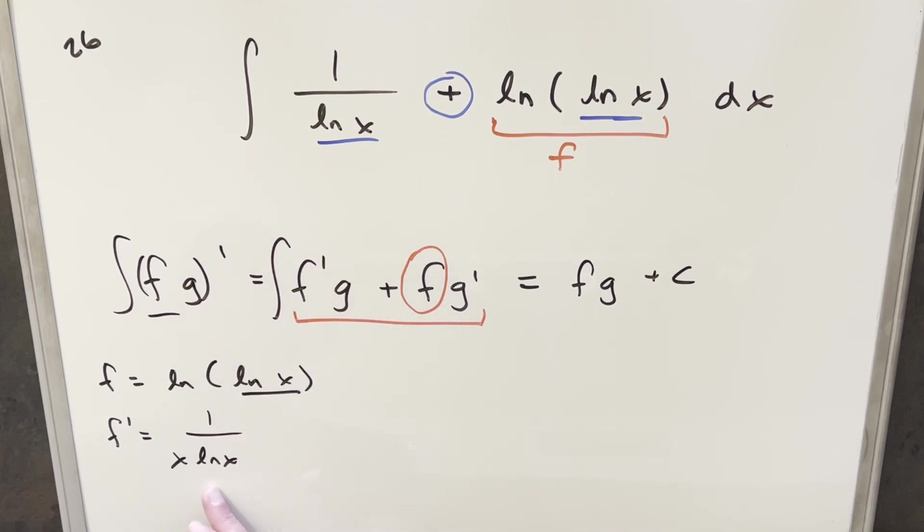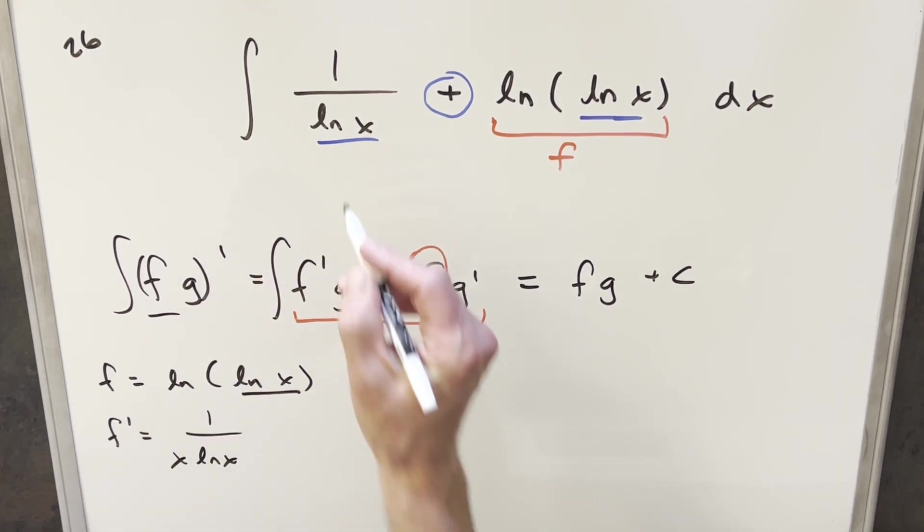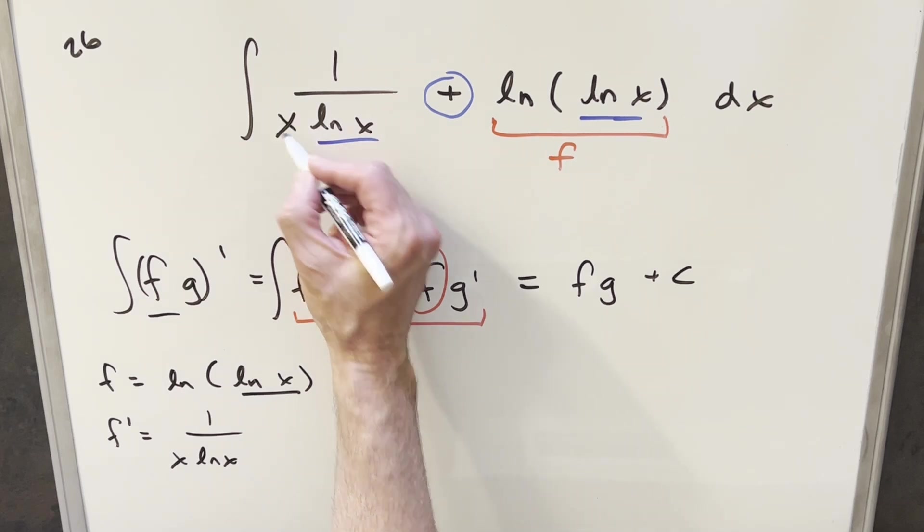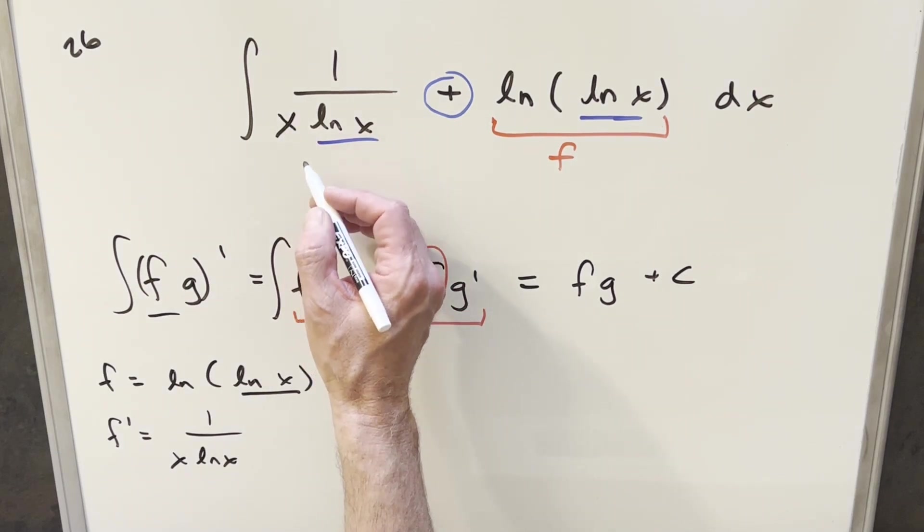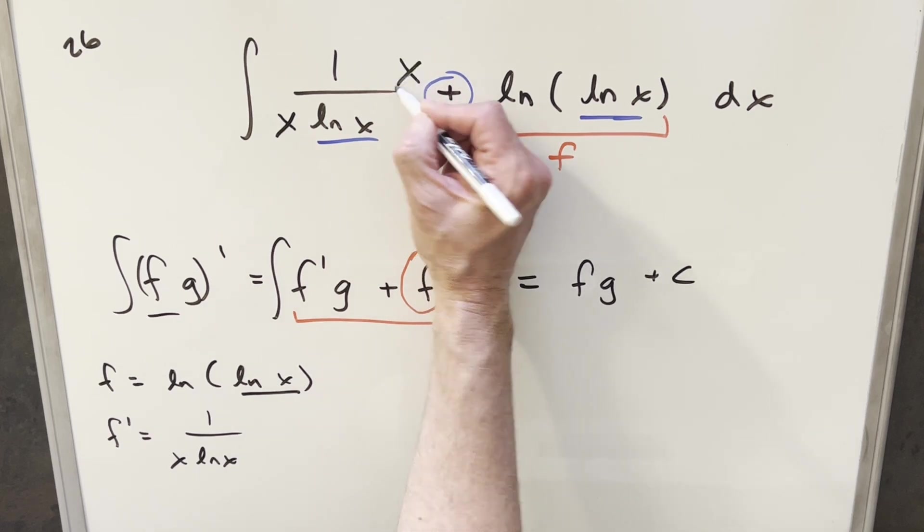Now, looking back at our integral, we don't actually have this 1 over x ln x. We just have 1 over ln x. Well, what I can do is actually create that by multiplying in 1 over x. I don't want to change it though, so let's multiply by an x over here.